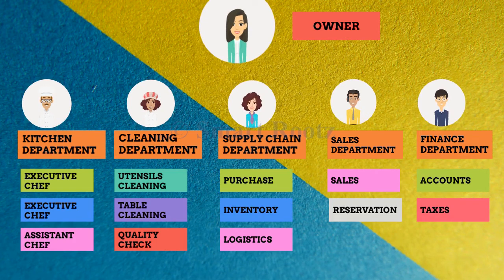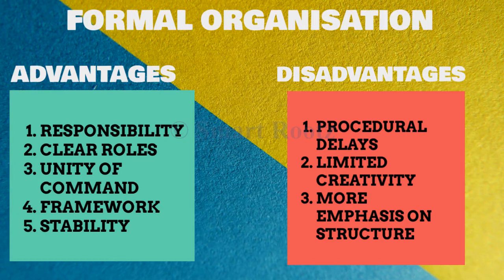Jo has set up a functional organizational structure which specifies boundaries of authority and responsibility and provides coordination to achieve the objectives. So Jo has set up a formal organizational structure. In this structure, it is easier to fix responsibility. There is no ambiguity in the role of employees and their duties. Unity of command is maintained, and it provides an effective framework for operating and also provides stability. However, there can be procedural delays because a line of communication has to be followed. Creativity can be limited because one cannot deviate from the framework and policies, and there is more emphasis on structure and work, making it difficult to understand human relationships.